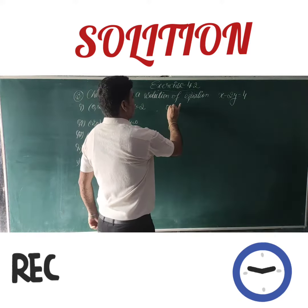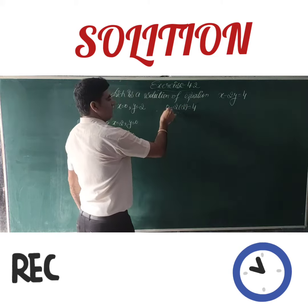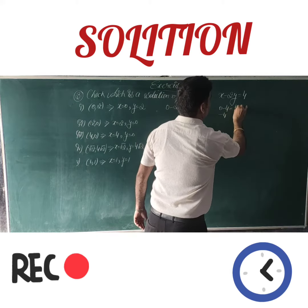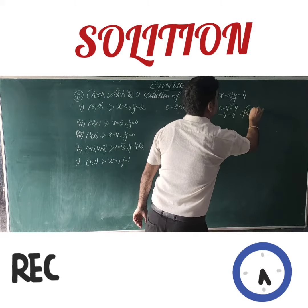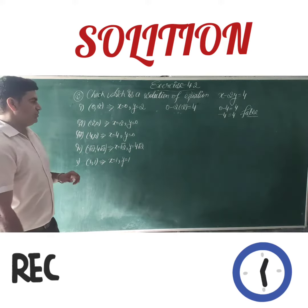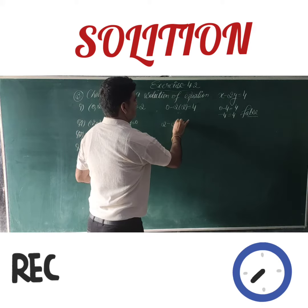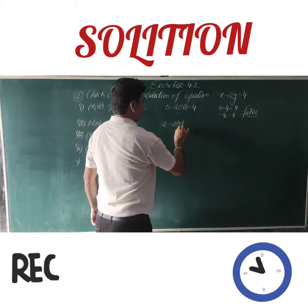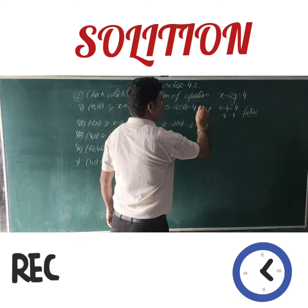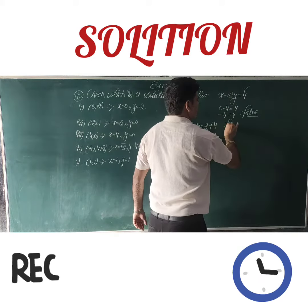First, we use x = 0, y = 2. Substituting: 0 minus 2 times 2 gives 0 minus 4 equals minus 4, which is not equal to 4. So this point is false — (0, 2) is not a solution. Moving to the second point, x = 2, y = 0: 2 minus 2 times 0 equals 2, which is not equal to 4. So the second option is also false.